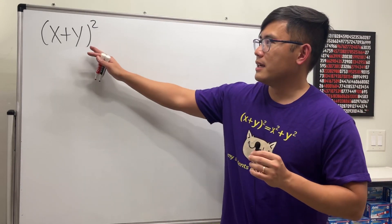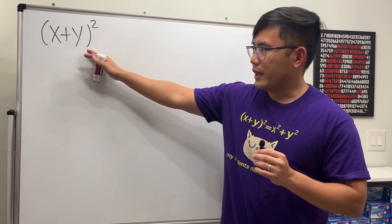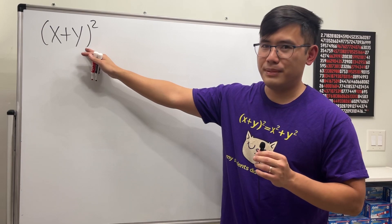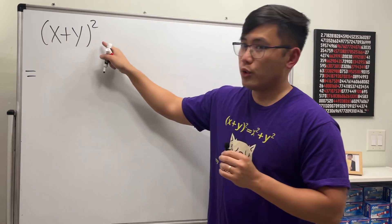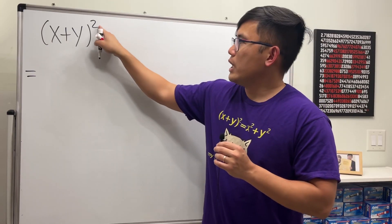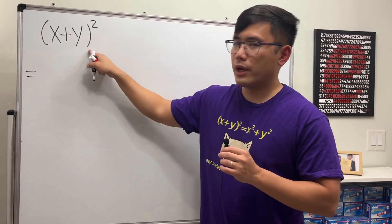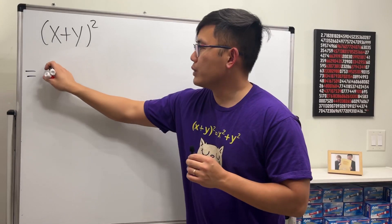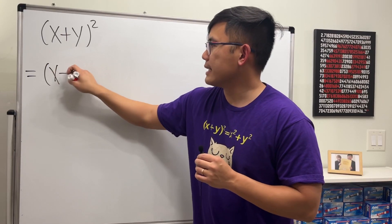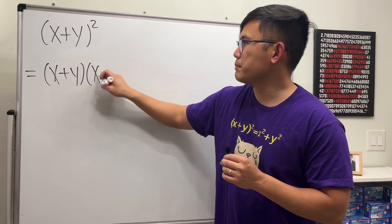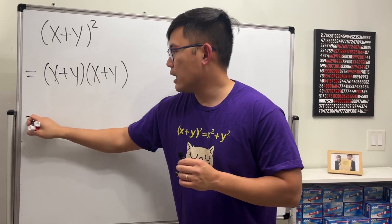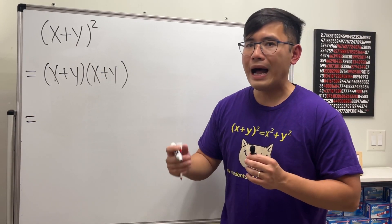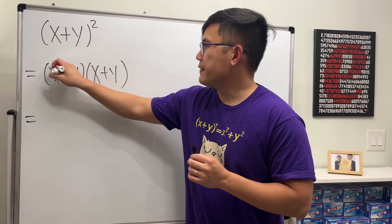I want to showcase two ways to properly expand (x + y) squared. For the first way, this is the typical way — the FOIL way. Since we have the second power, we are going to write this down twice: (x + y) times (x + y). Now let's spell out FOIL: F-O-I-L.